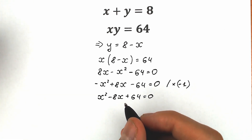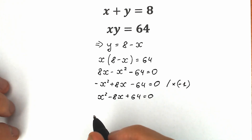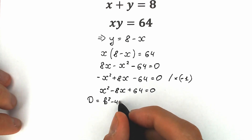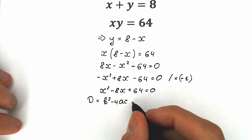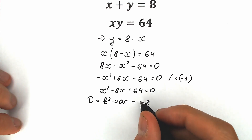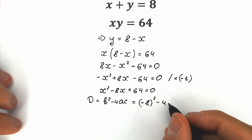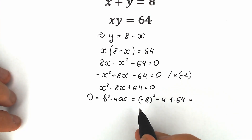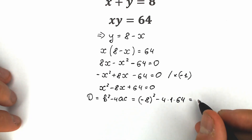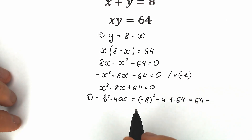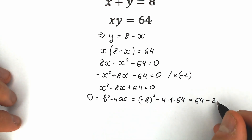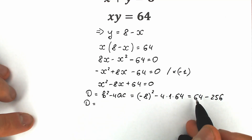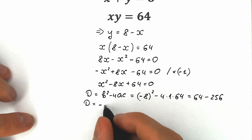There are a lot of approaches to solve this, but the main common one is to find the discriminant. From school we know discriminant equals b squared minus 4ac. Let's plug in the coefficients: b is minus 8, so we have (minus 8) squared minus 4 times 1 times 64. Minus 8 squared equals 64, and 4 times 64 equals 256. So our discriminant equals 64 minus 256, which gives us minus 192.